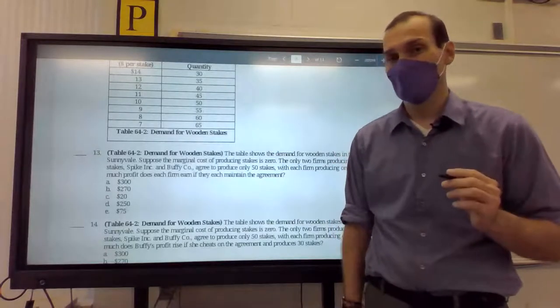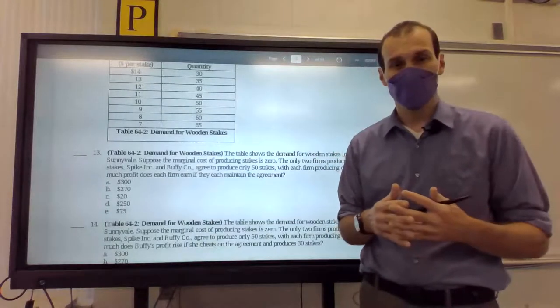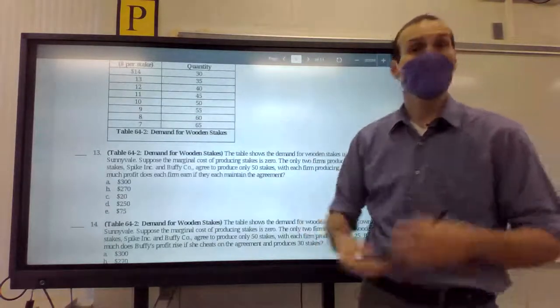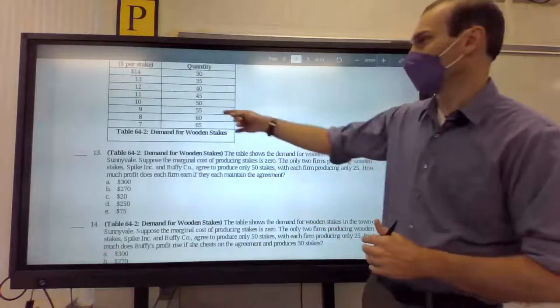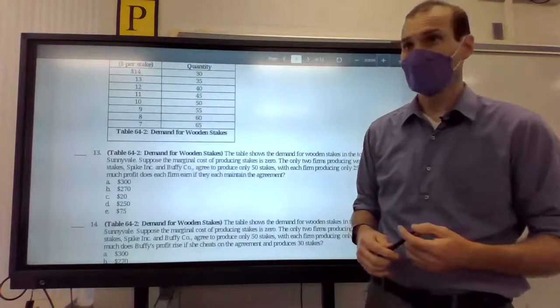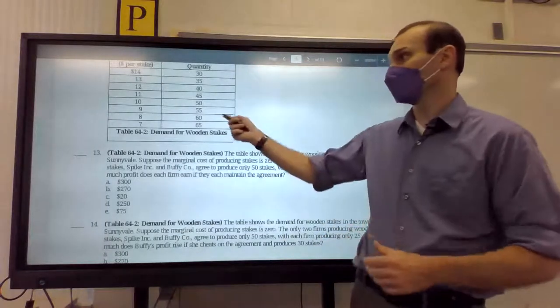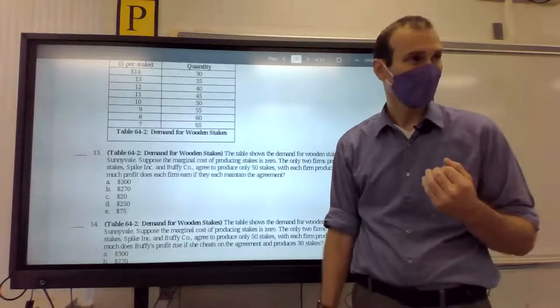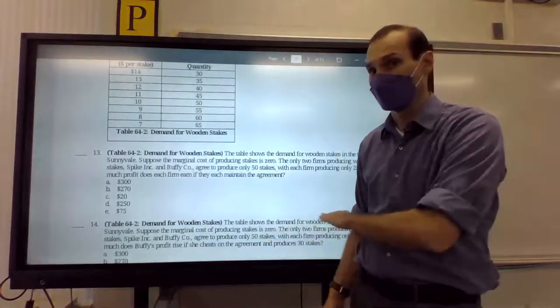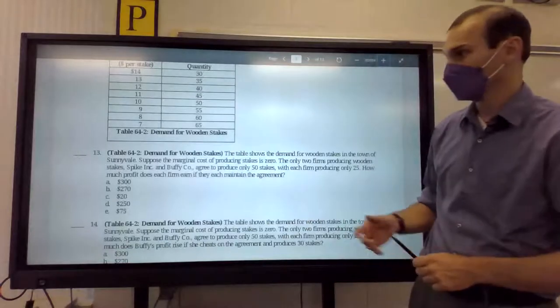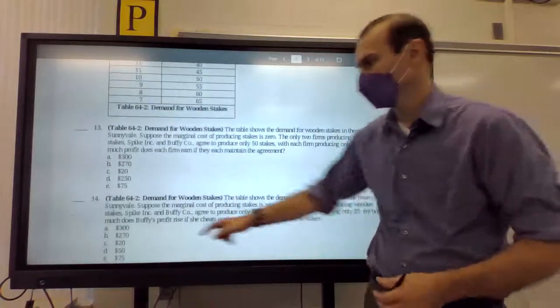So, Buffy's going to make 30. Spike's going to hold the agreement at 25. How many stakes is that total in the market? 30? 25? That would be 55 stakes. Well, if I want to sell more stakes, I need to do what? Lower the price. So, I lower the price to $9. Okay. But it's set. So, what will Buffy, who cheated, what will her profit be? She made 30 stakes, sold them for $9 each. What's her total revenue? 270. 270. 9 times 30 is 270. That's her profit because there's zero cost in this example. Well, it was 250 from the previous question. Now, it's 270. How much more is it? The answer is $20.